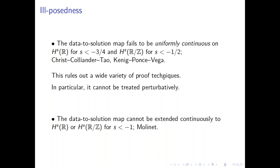A more serious form of ill-posedness was proved by Molinet, who showed that the data-to-solution map cannot be extended continuously, both on the real line and on the torus, if the regularity is less than H^{-1}. This says that the Capella-Topalov result is sharp, and this is as far as one can go for the real line problem as well.